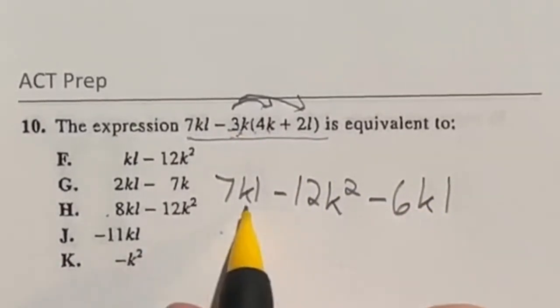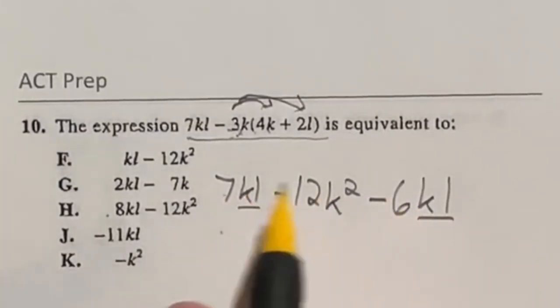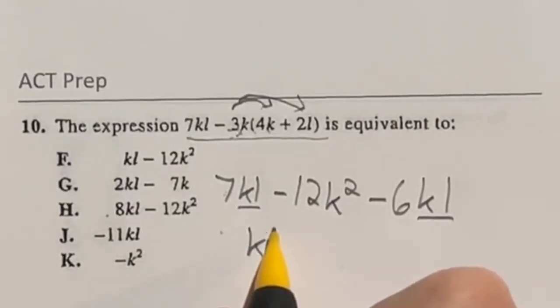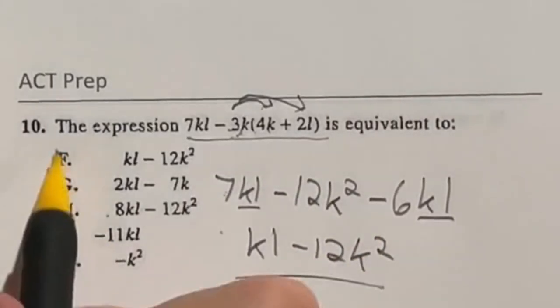Now remember we have a k and l right here and a k and l right here so we can combine these two terms. Well 7 minus 6 is just going to leave me with 1 and that's just 1kl. And then we're subtracting still that 12k squared which means our final answer here is F.